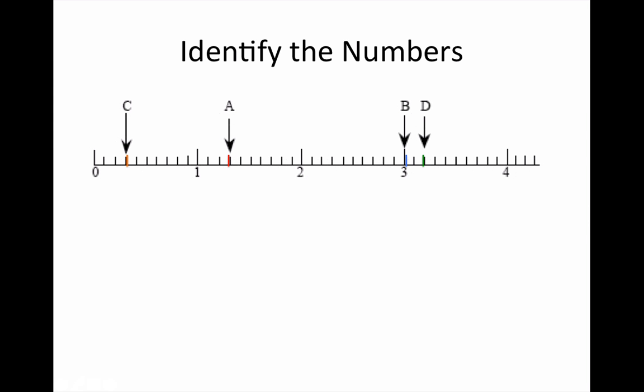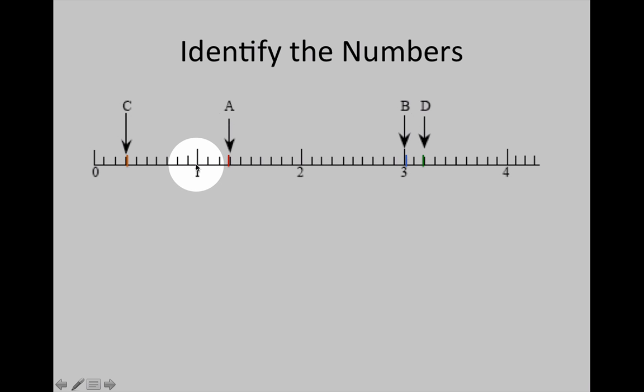Let's see if we can identify the numbers by name, starting with A. A is going to start with 1, and we're going to count up from there: 1 and 1 tenth, 1 and 2 tenths, 1 and 3 tenths.